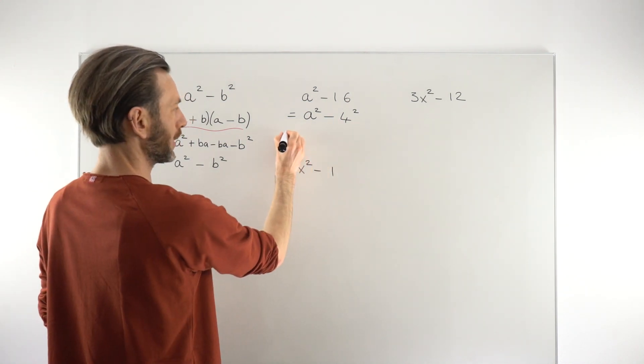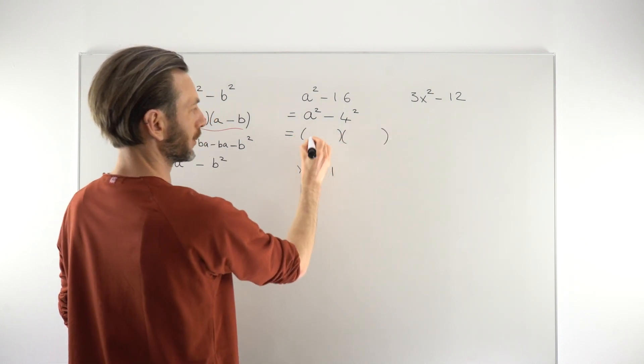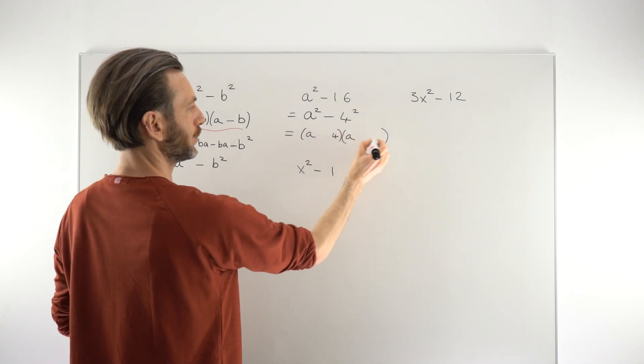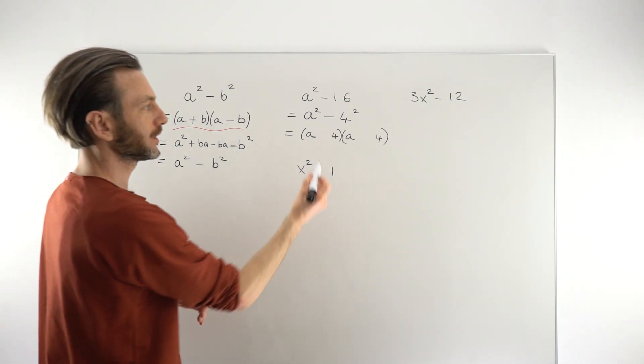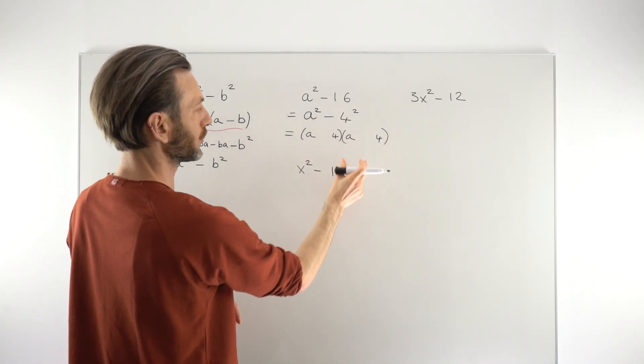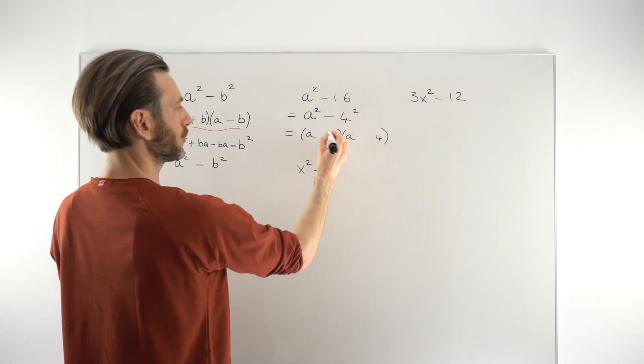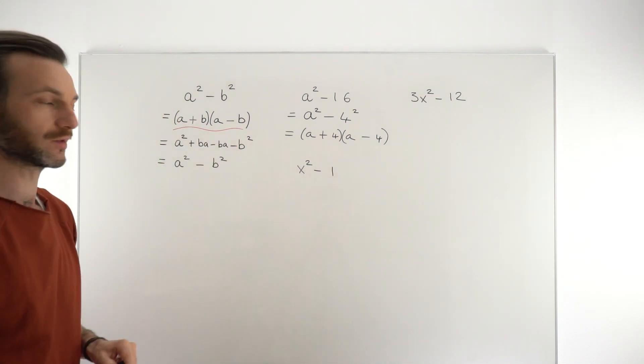Now it's in the correct format we can just go ahead and put down our two brackets. We're going to put an a there and an a there to give us a². We're going to put a 4 here and a 4 here to give us 4² or 16. It's always a plus and a minus. It doesn't matter on the order. That's us done.